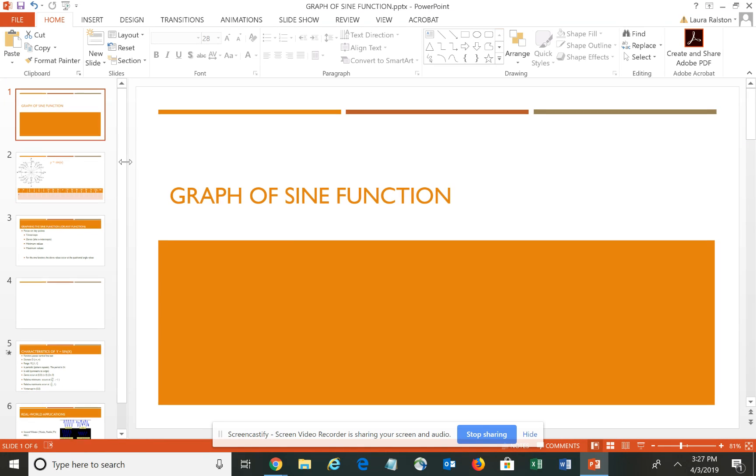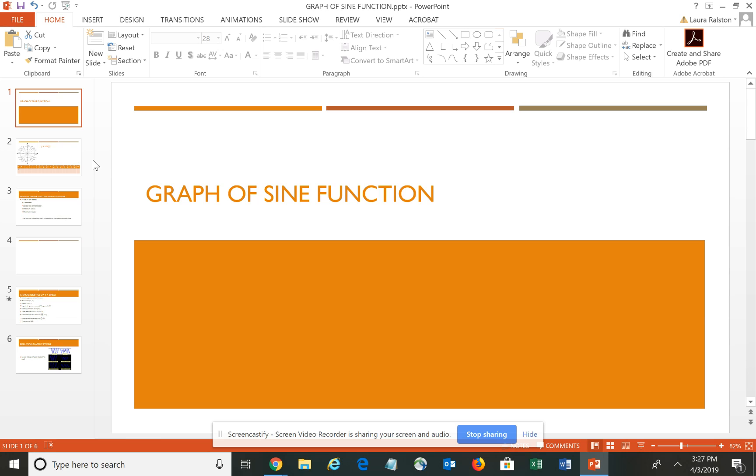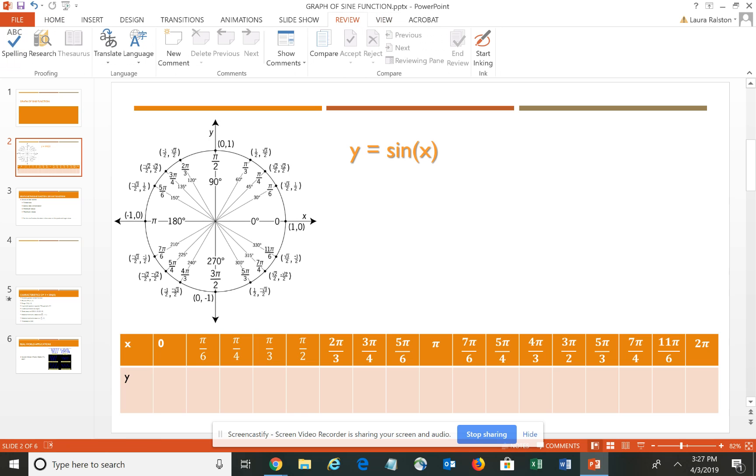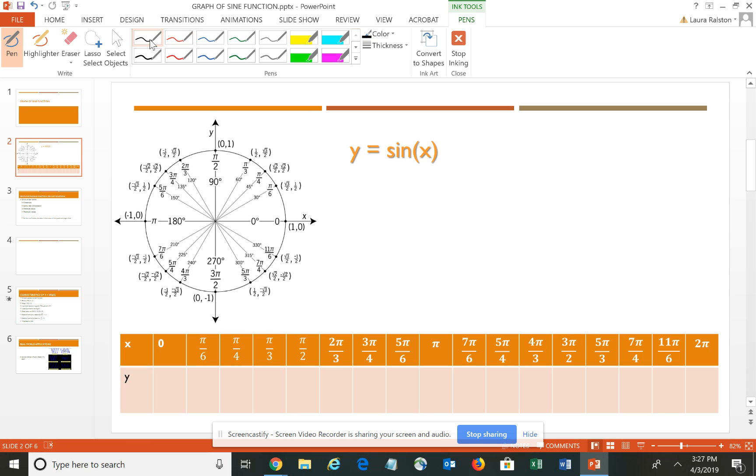In this video, we're going to look at the basic graph of the sine function. This is the most basic form that the sine function can have. In equation form, we would typically write Y equals the sine of X, or if you want to emphasize that you're dealing with a function, you could see it written as F of X equals the sine of X. Hopefully you remember from previous algebra coursework that Y and F of X represent the same variable.